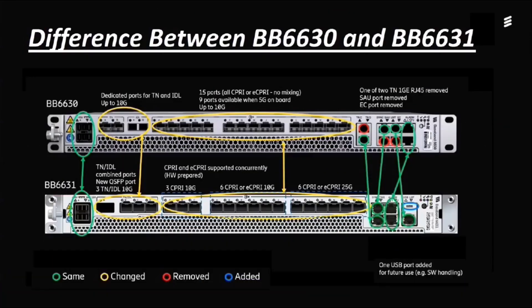In this video, we will know about the difference between BB 2630 and BB 2631, which are basebands. We have two basebands: BB 2630 and BB 2631. Both basebands can be used for 2G, 3G, 4G, and 5G technology. This video would be helpful for interviews at Ericsson or any vendor company, as they will likely ask about the difference between these basebands.